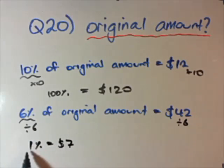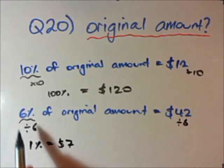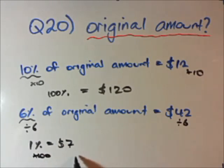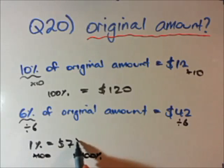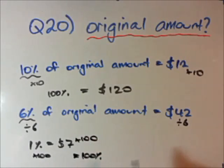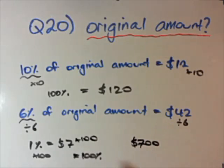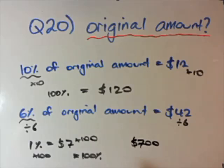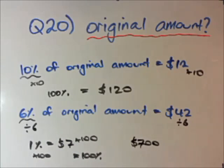The reason I find 1% first is that once we know 1% we can just multiply by 100 to get 100%. So 1% is $7, times 100 gives $700 — that's our original amount. This two-step method takes a little longer but works for every question.